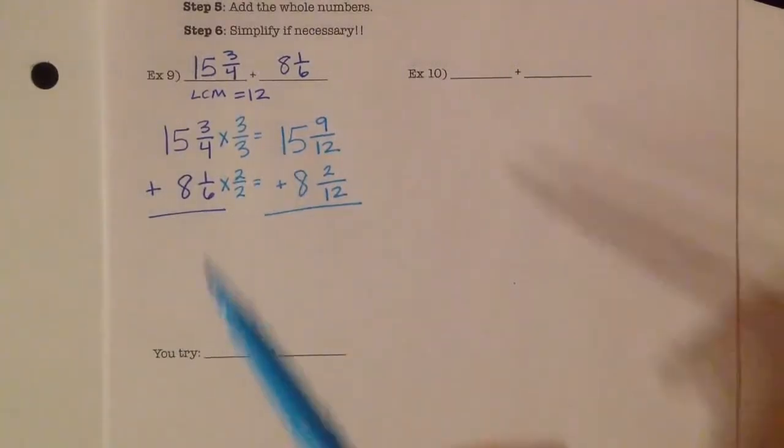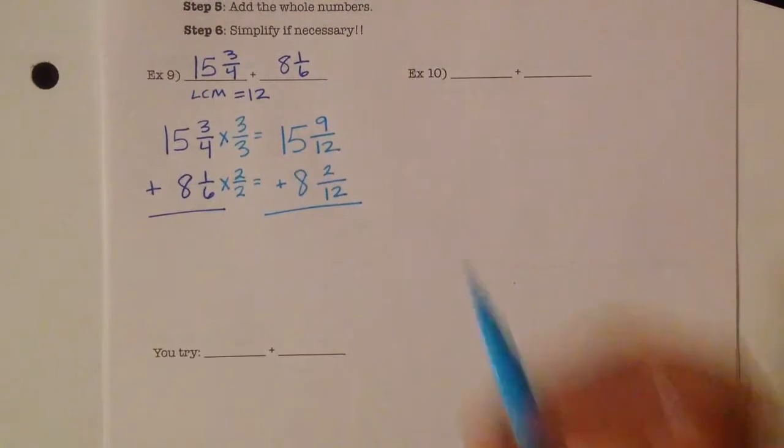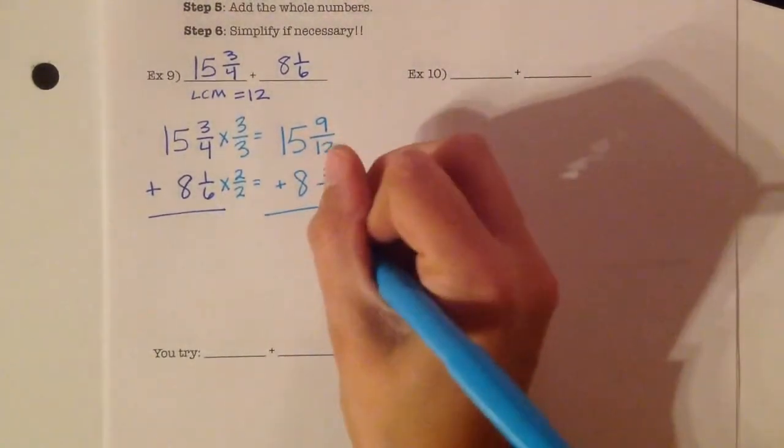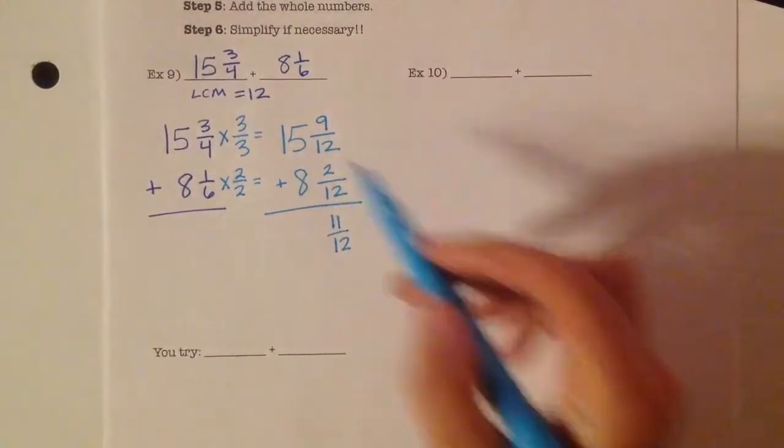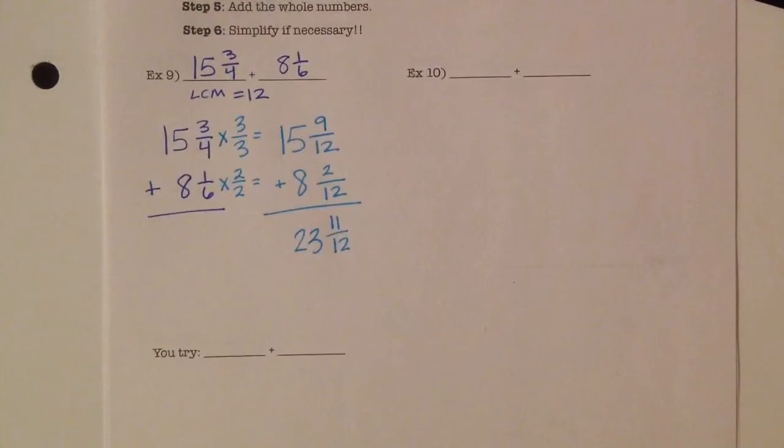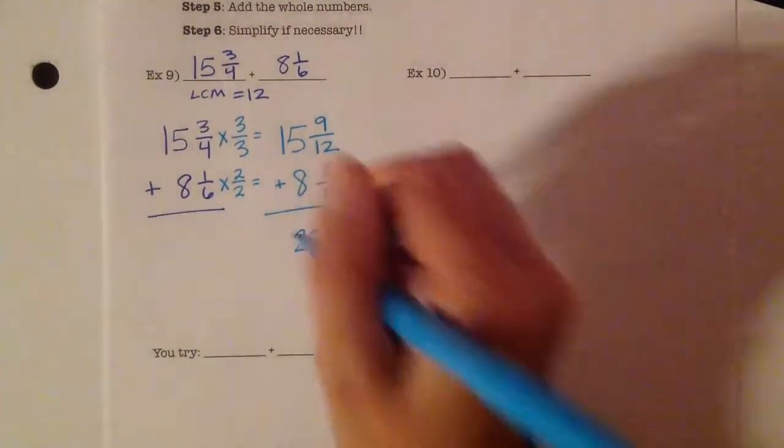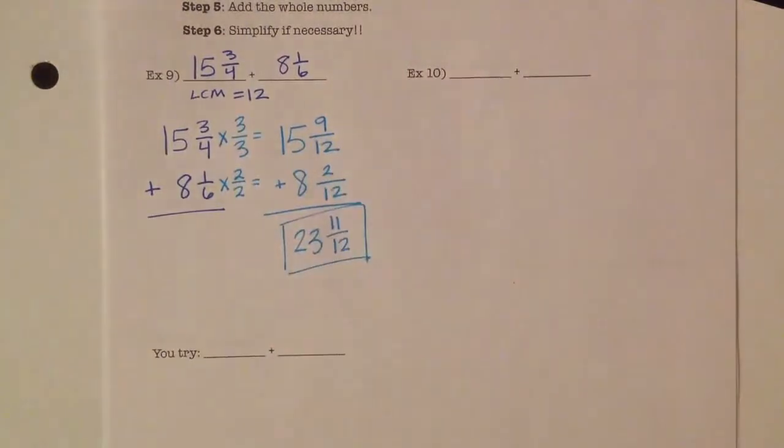A lot of people like to make these improper. You can get to the right answer doing that, but a lot of times you're making it more difficult on yourself than you need to. You're multiplying, especially when you've got large whole numbers, by big values that makes it more complicated. Now let's go ahead and add. 9 plus 2 is 11 over 12. 15 plus 8 is 23. I need to double check to make sure if I need to simplify that. I don't. So that is my final answer.